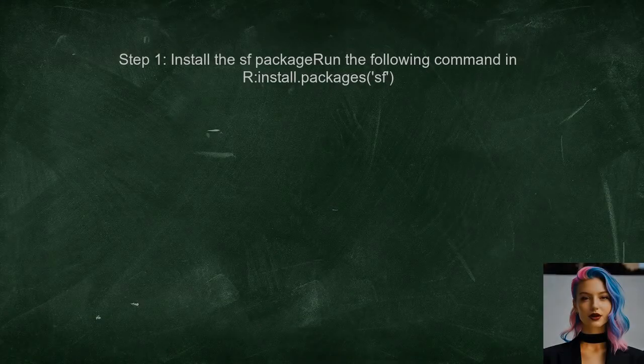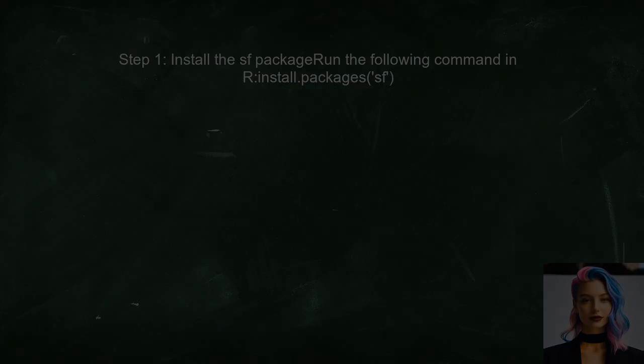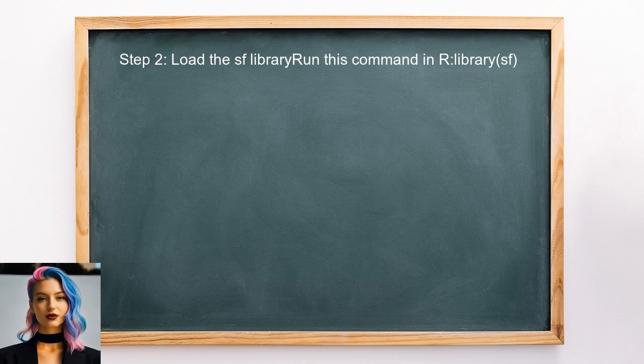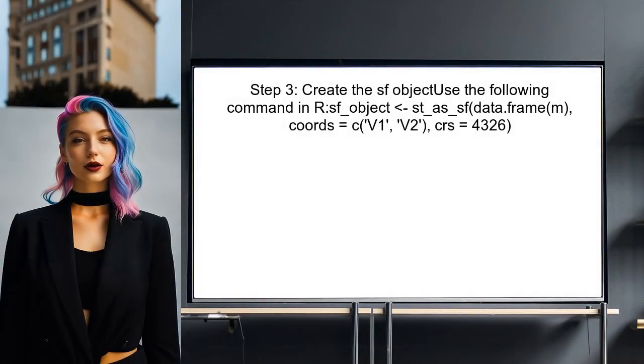To convert the two-column matrix into an SF object, the user should first ensure they have the necessary library installed. The user can do this by running the install command for the SF package. Next, the user should load the SF library to access its functions. This is done using the library function.